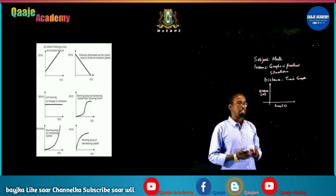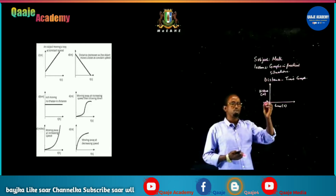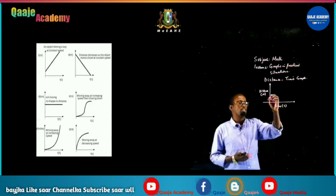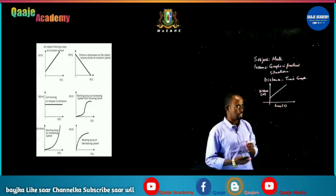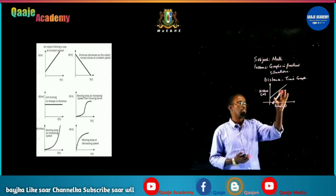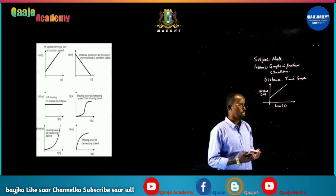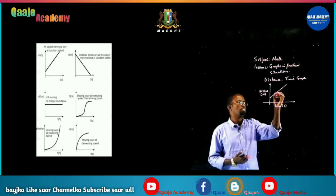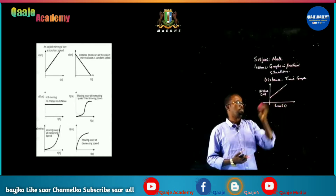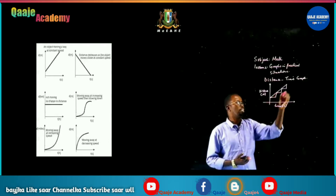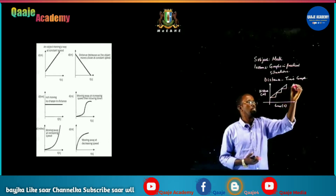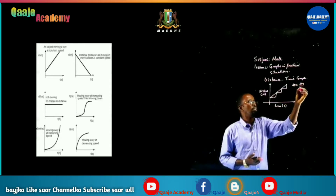A distance-time graph tells us how someone or something has traveled and how long it took. Now these are examples of certain graphs. The first one is a graph that starts at a particular point and then moves straight. If you try to find the gradient, you get a constant gradient. The gradient is equal to change in y divided by change in x.